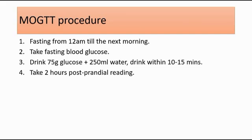After taking the fasting blood glucose level, the patient will be asked to drink a cup of glucose and water within 10 to 15 minutes. After 2 hours, the doctor will take blood again for the 2-hour postprandial reading. So there are 2 readings for MOGTT: the fasting blood glucose level and the 2-hour postprandial reading.